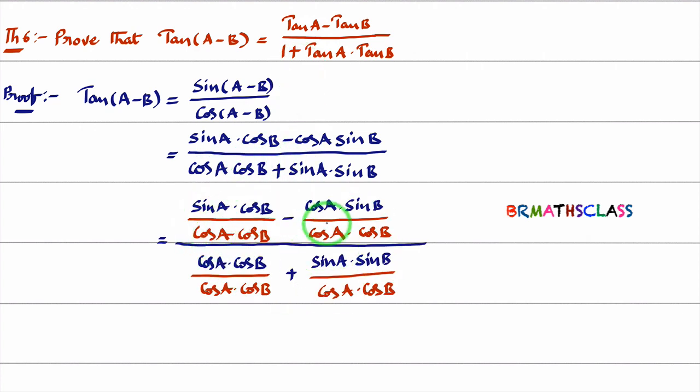You observe in this, what I did here, after this step, in the numerator and denominator, I divide with cos A cos B. Why we divide it like this? Just to get 1 here. Once we got 1 here, rest of all the things comes automatically.